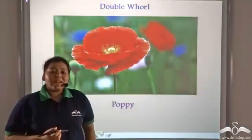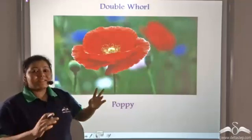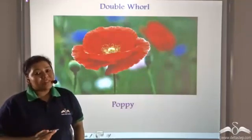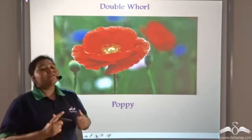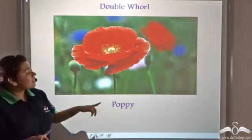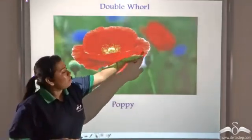Now, the corolla can be double whorled also, that is, two layers of corolla can be present. One such example of double whorled flower is poppy. See, it has two layers of corolla.